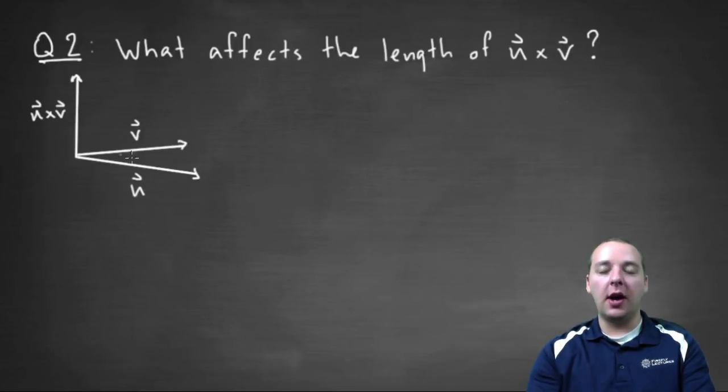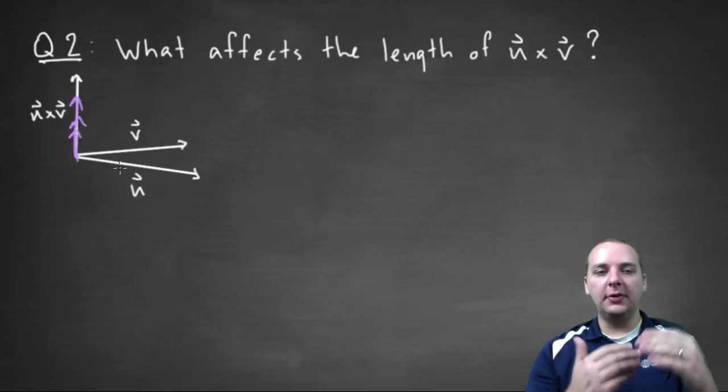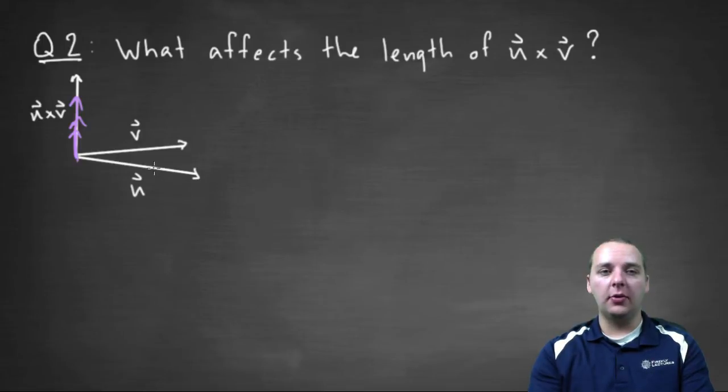but so is this one, and so is this one, and so is this one. All these different scalar multiples are all orthogonal to u and v. How do you know how long the cross product is supposed to be?